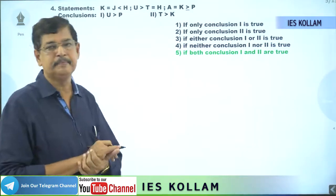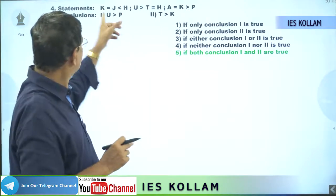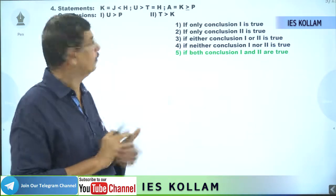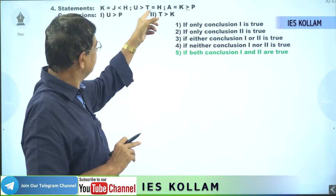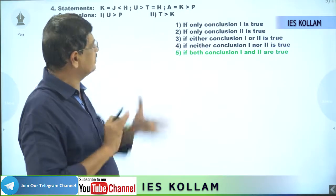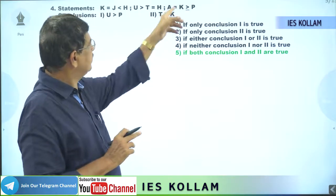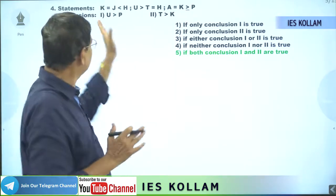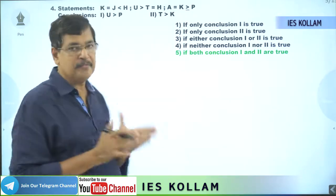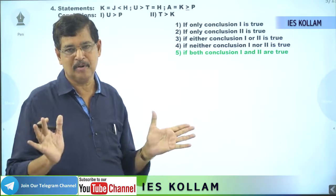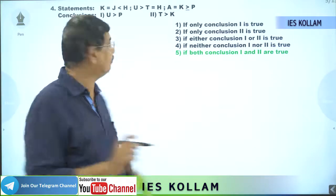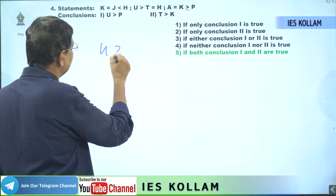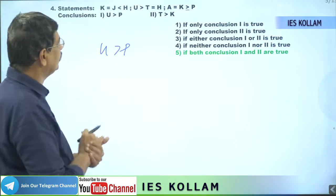Now take the fourth problem. Here: k equal to j less than h — first statement. u greater than t, and e equal to h — second statement. a equal to k, greater than or equal to p — third statement. And the conclusion: u greater than p. We always have to start from the conclusion. We have to check whether u greater than p is correct or not.